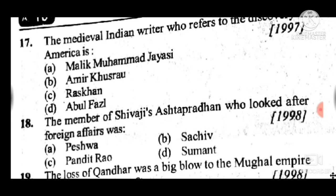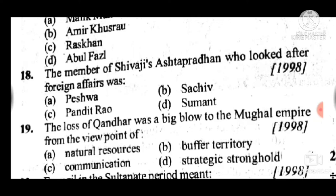Question 18: The member of Shivaji's Ashta Pradhan who looked after foreign affairs was — answer is D, Sumant. Question 19: The loss of Kandahar was a big blow to the Mughal Emperor from the viewpoint of — answer is the strategic stronghold.